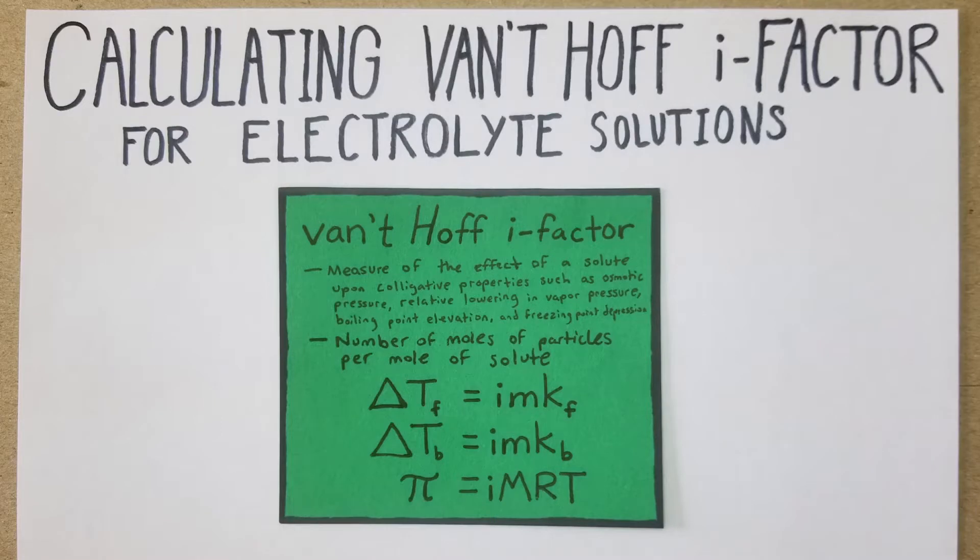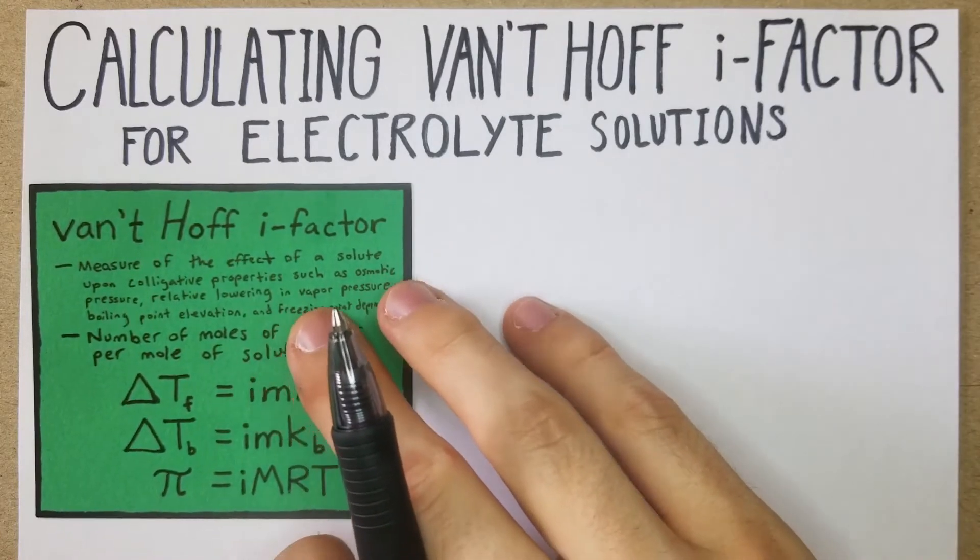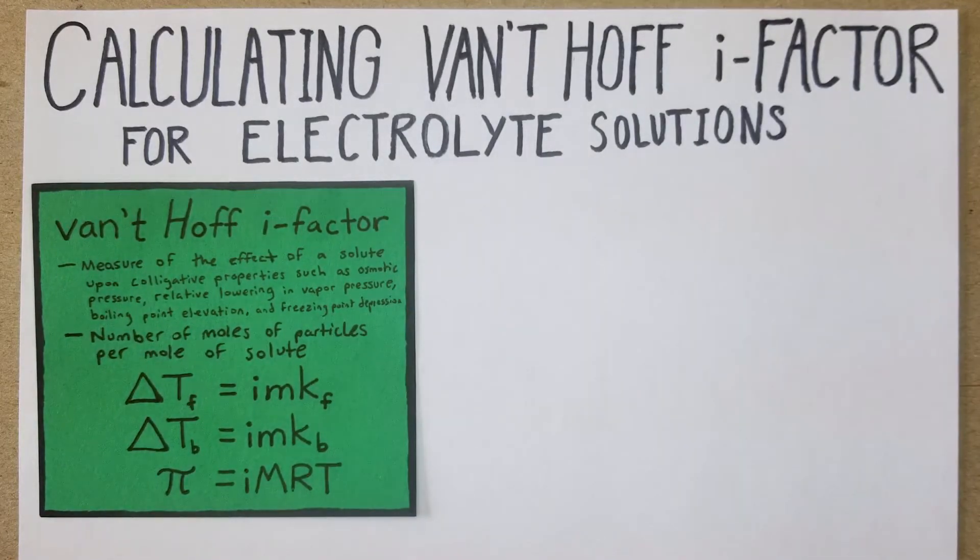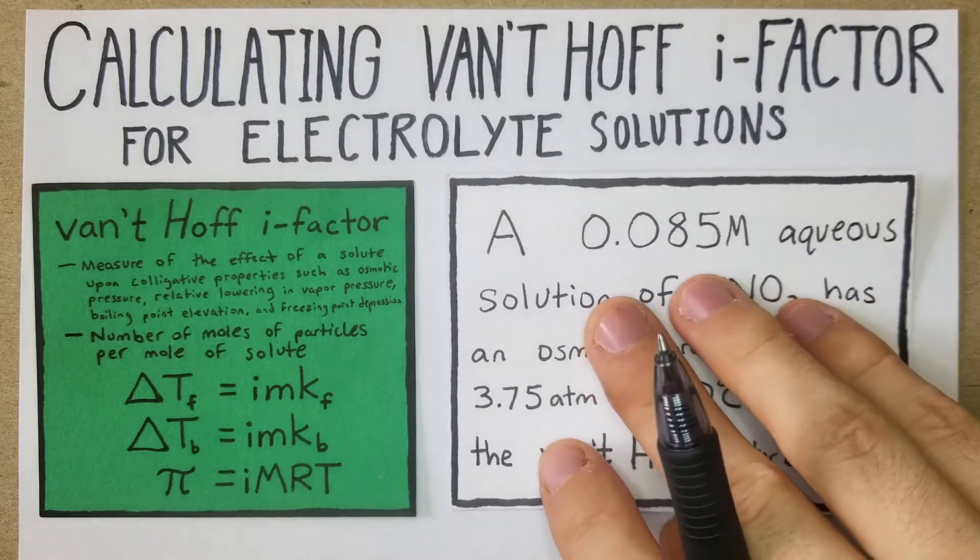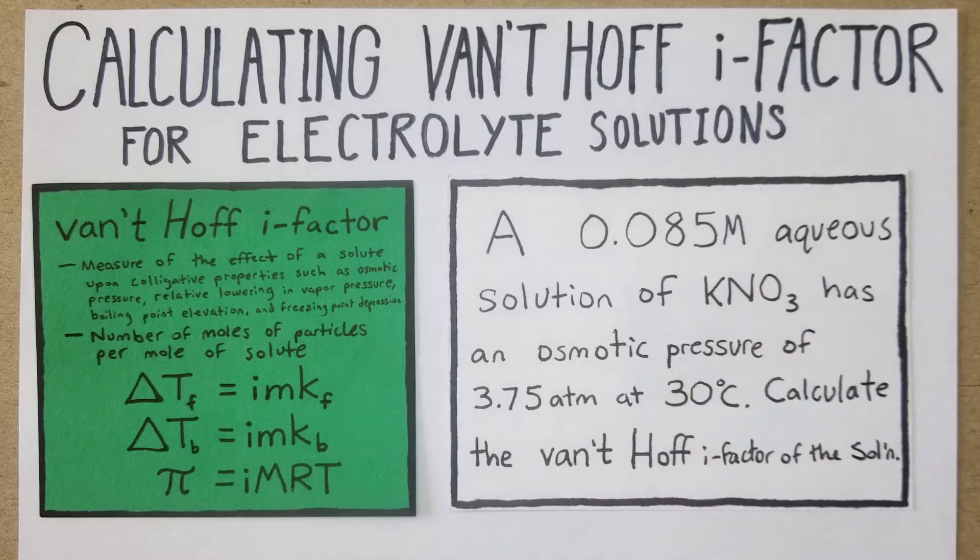You measure it in the number of moles of particles per mole of solute, and essentially it helps us determine the relationship between the actual number of moles that were added to make a solution and the apparent number as determined by the colligative properties. It helps us fill in the difference between why the boiling point is increased more than you would have expected or less than you would have expected based on the molarity that you think you added.